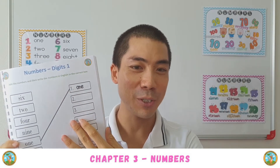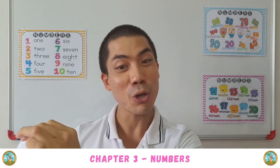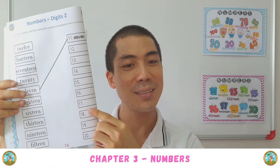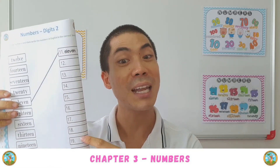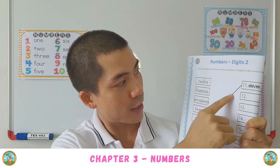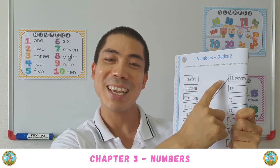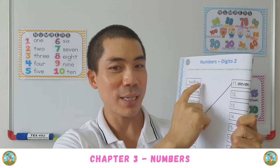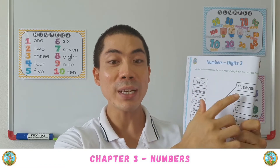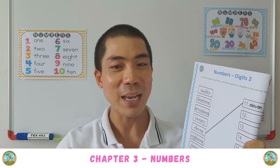After we finish the first worksheet, we go on to the second worksheet, which is the teens. Now we have from 11 to 20. And we again try to put the lines to match the numbers. And then we can practice writing the numbers out. Remember to read as you write so that you can practice your memory faster.